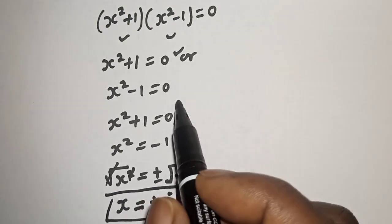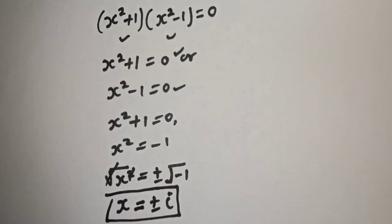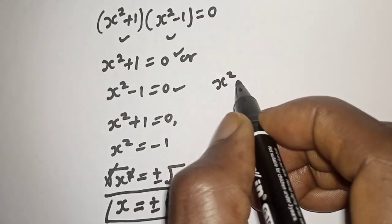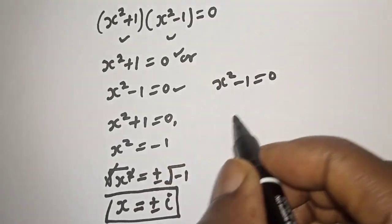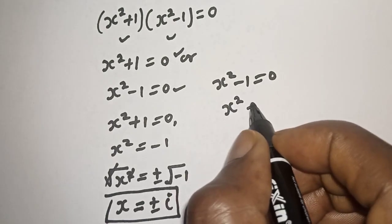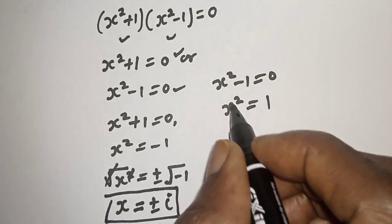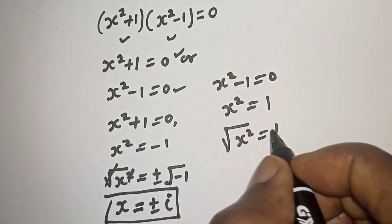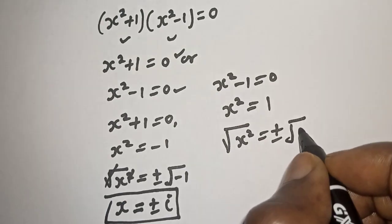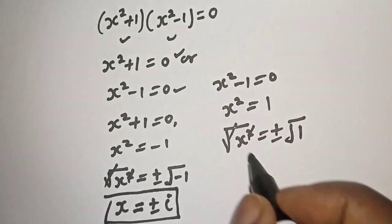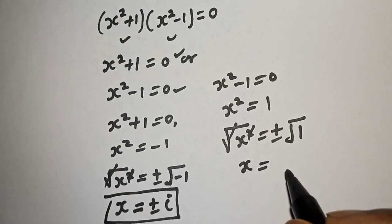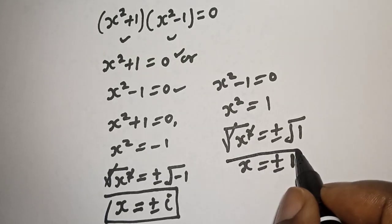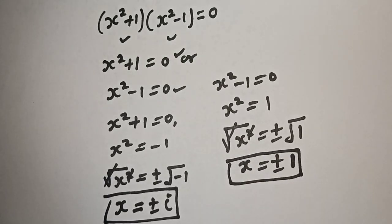Then from the second case, x squared minus 1 is equal to 0, so x squared is equal to 1. Let's take the square root. x is equal to plus or minus the square root of 1, which is plus or minus 1. This gives another value of x.